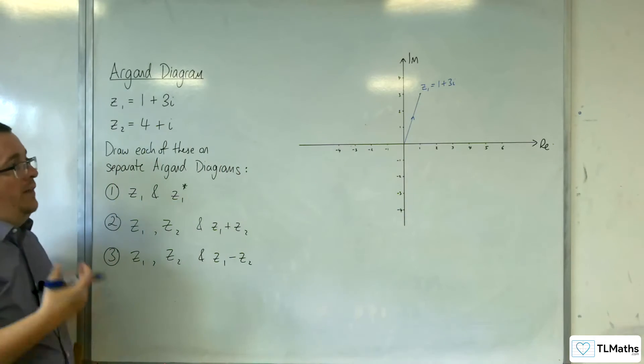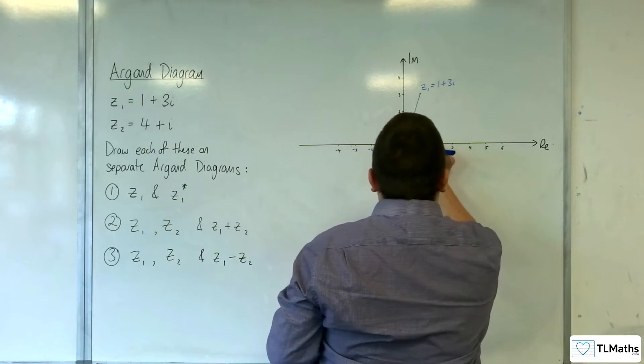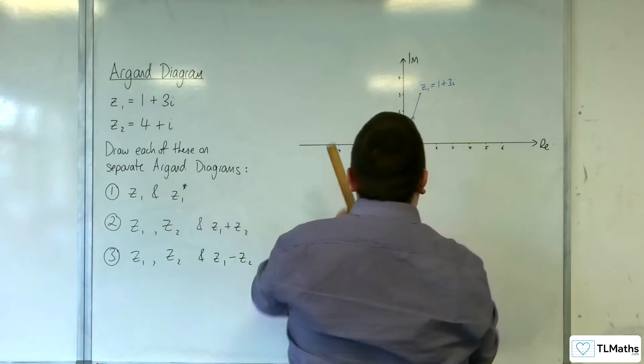And then we want the complex conjugate of Z1. So, 1 take away 3i. So, 1 take away 3i down here.